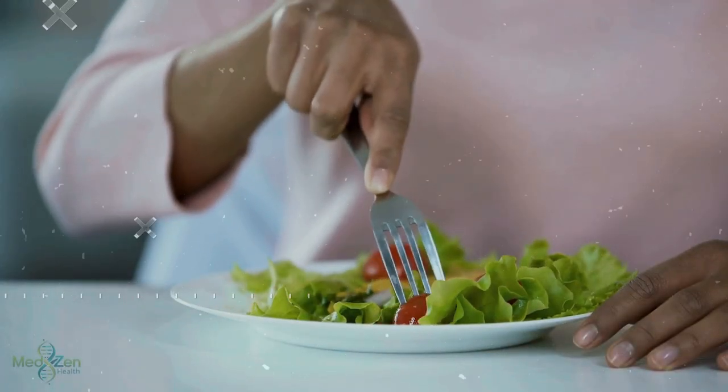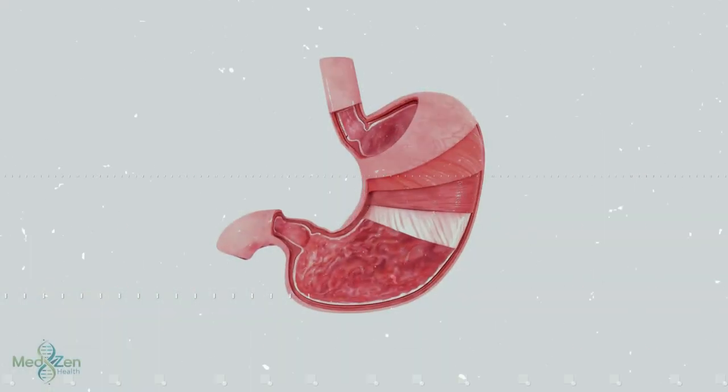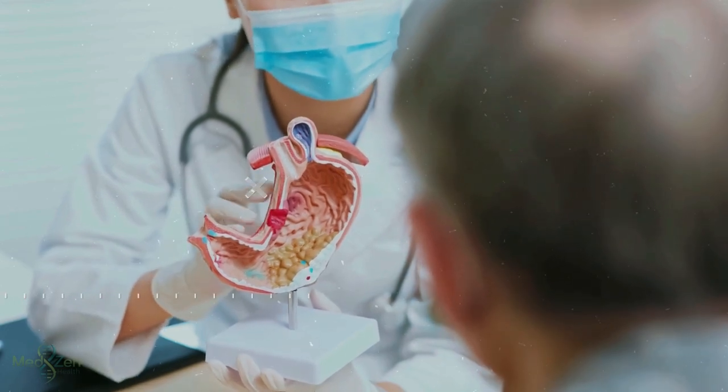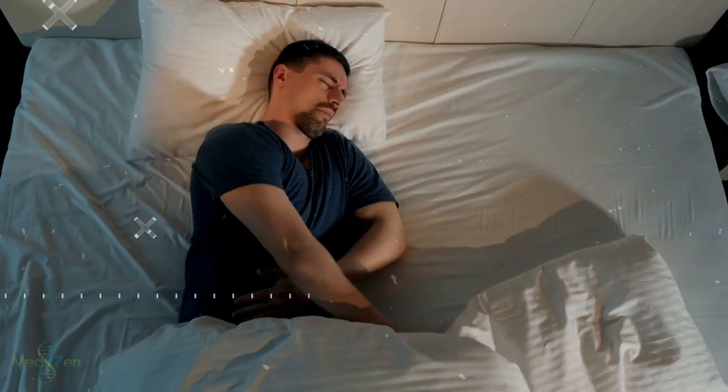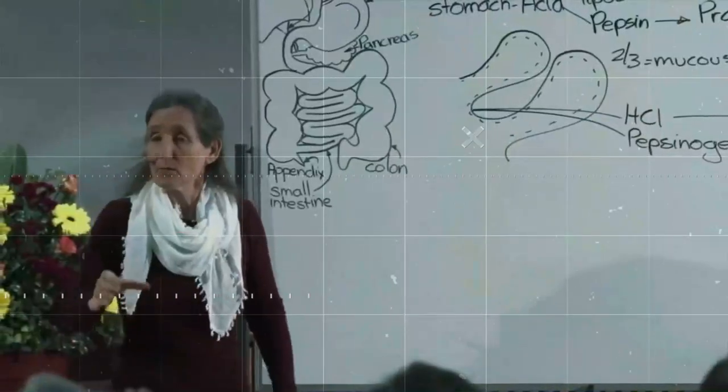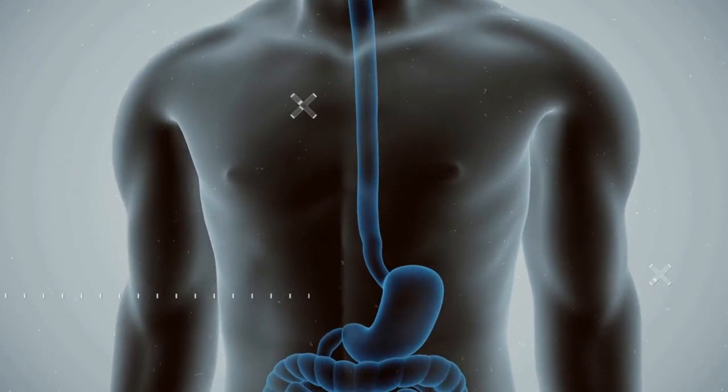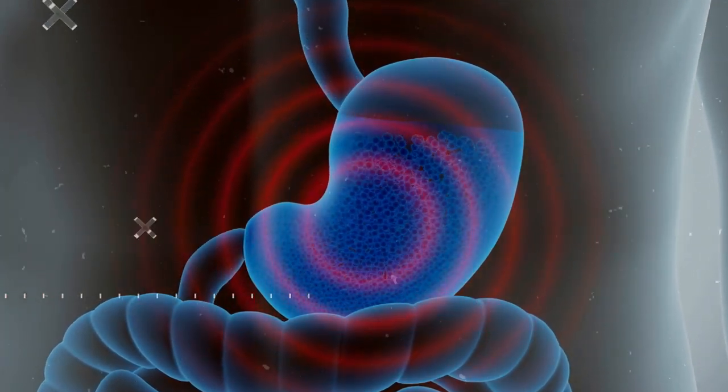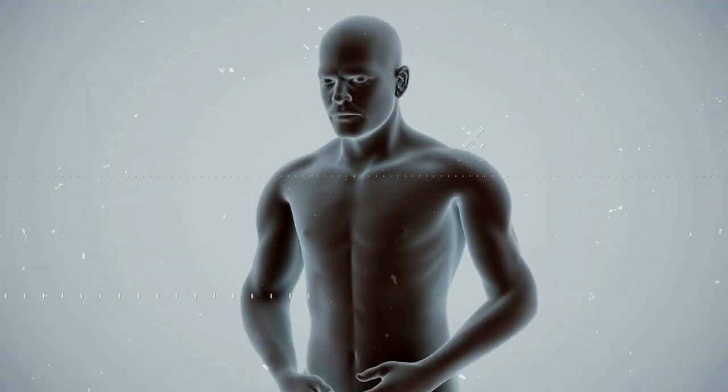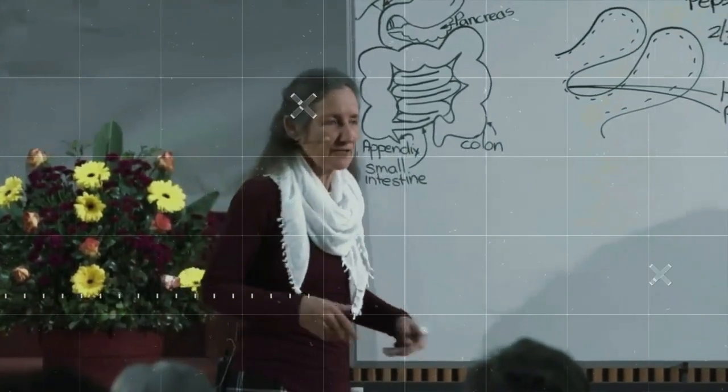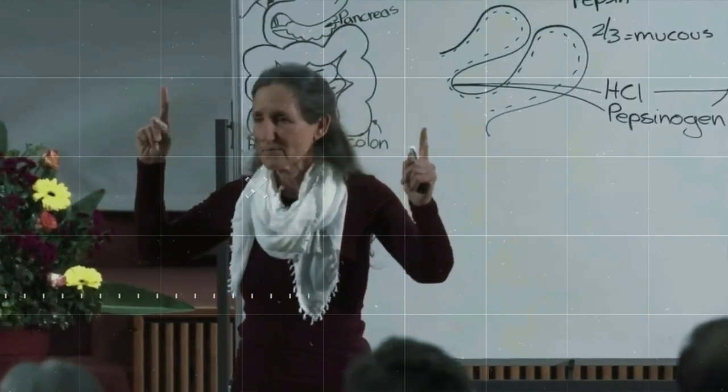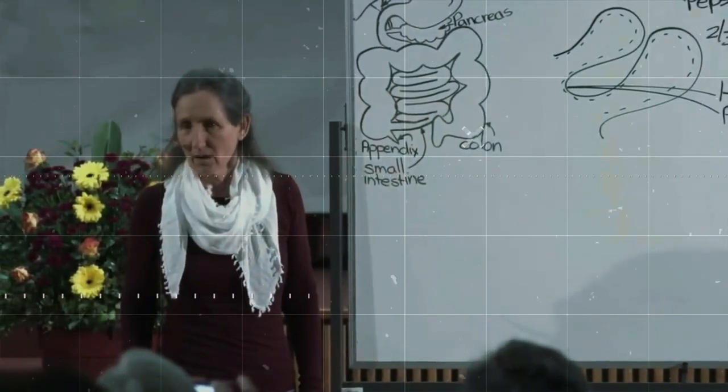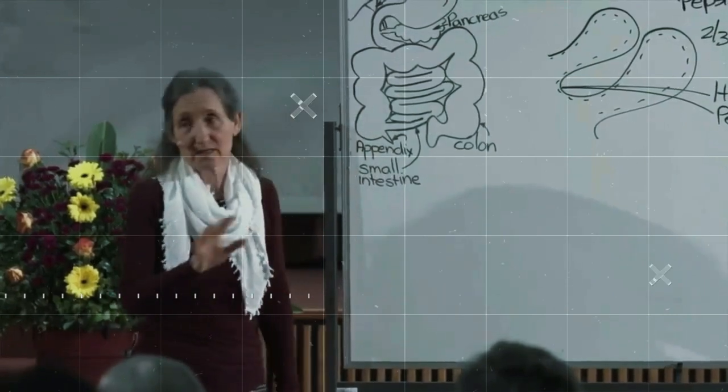When we undergo proper digestion through thorough chewing and appropriate enzymatic activity, we minimise the risk of damage to the stomach lining. This protective function is vital for maintaining gastrointestinal health and preventing conditions like gastritis or ulcers that can result from prolonged exposure to high acidity. So if someone's drinking with their meals, they water down the enzymes in the stomach. And the stomach knows that, so digestion stops, all the fluid has to be got rid of, and then it has to go back to digesting the food.